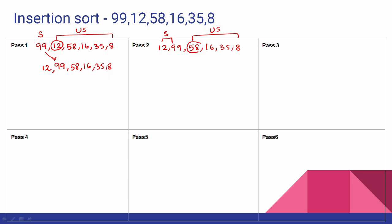Next, we take 58. First, compare 99 with 58 - we can move 99. Next, compare 12 and 58 - 12 and 58 are not in wrong order. So we put 58 in the empty space. The sorted part becomes 12, 58, 99.